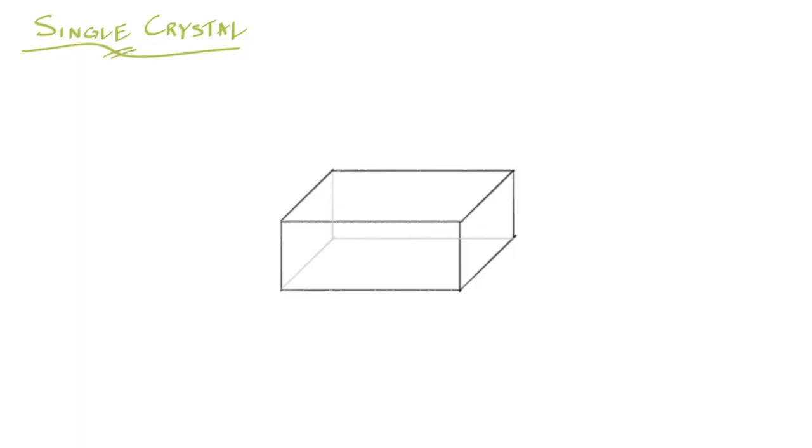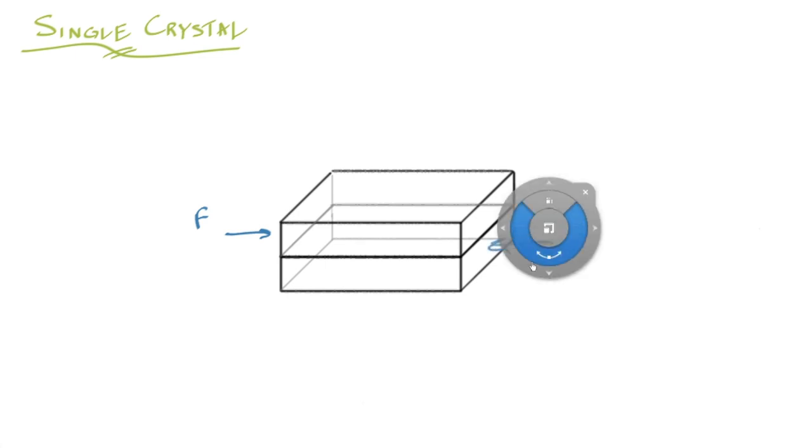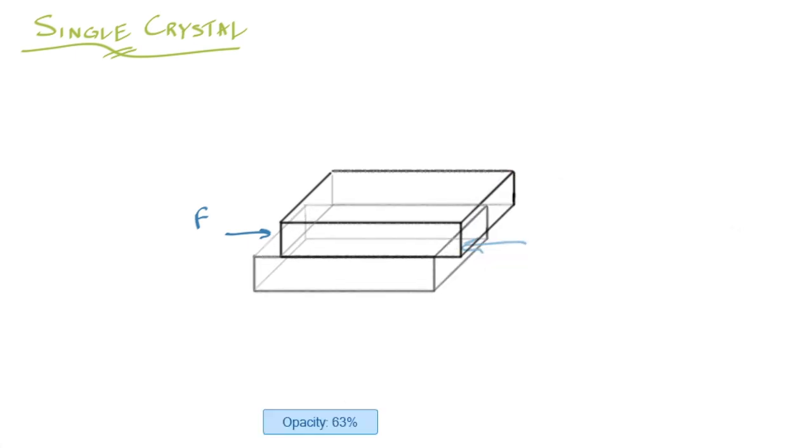What I want to do is I want to consider a single crystal of a material. So I've drawn a little rectangular solid there and what we're going to try to do is we're going to try to cleave this thing in half. Let me illustrate what I mean by that. We're going to apply a force, apply a force to this here and here, and then what we want to do when we apply the forces is observe it starting to deform like this.